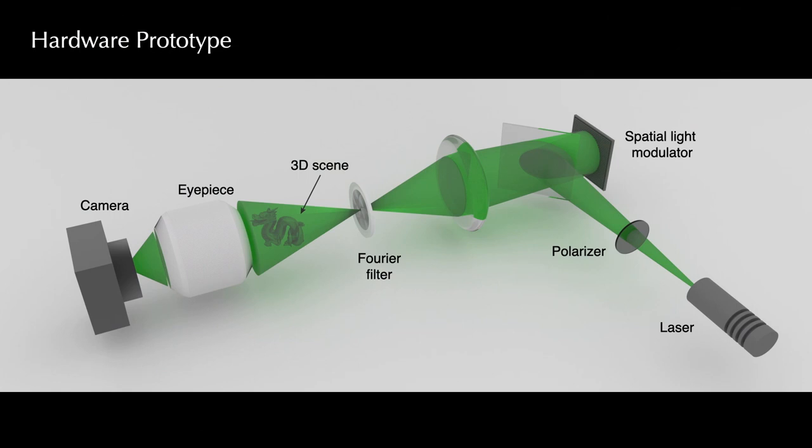We build a simple benchtop holographic projector to validate the CNN predicted holograms. Here, the polarized laser beam is directed to the SLM by a half-mirror, and the 3D image is filtered in the Fourier space and imaged by a camera.